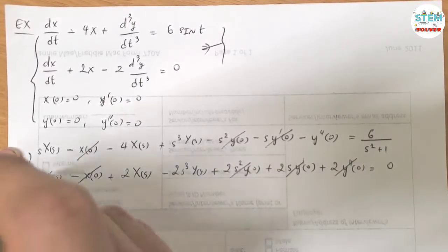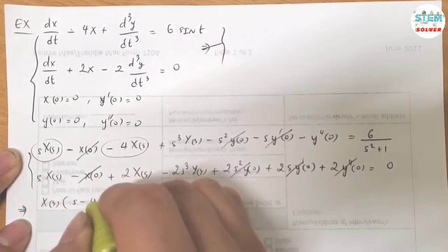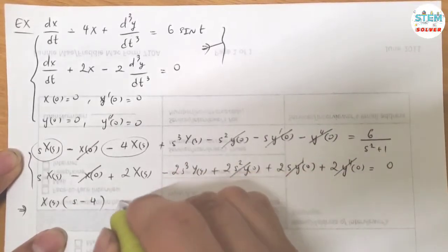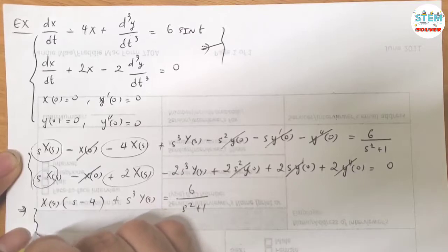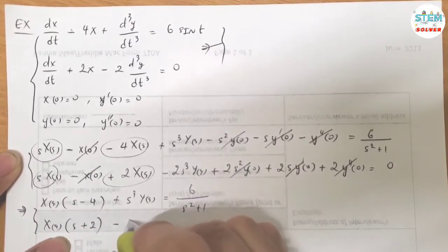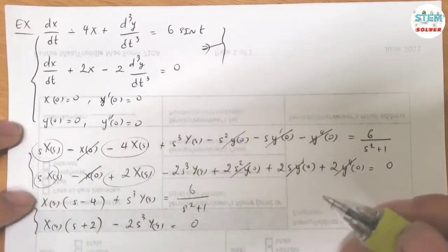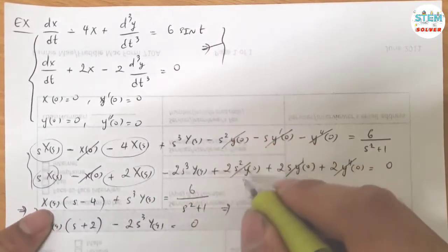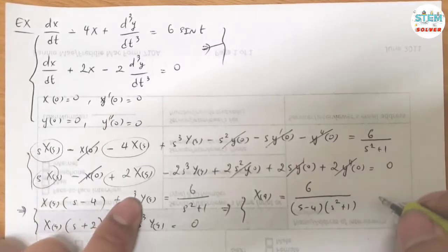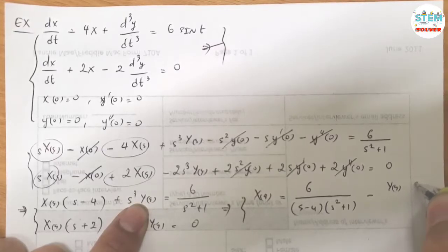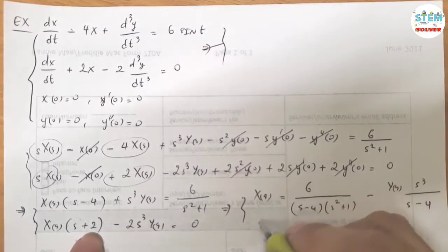For the first simplified equation, factor out capital X(S) to get (S minus 4) times X(S), plus S cubed times capital Y(S) equals 6 over S squared plus 1. For the second equation, (S plus 2) times X(S) minus 2S cubed times capital Y(S) equals 0. Divide the first equation by (S minus 4) and the second by (S plus 2) to get X(S) alone on each side.